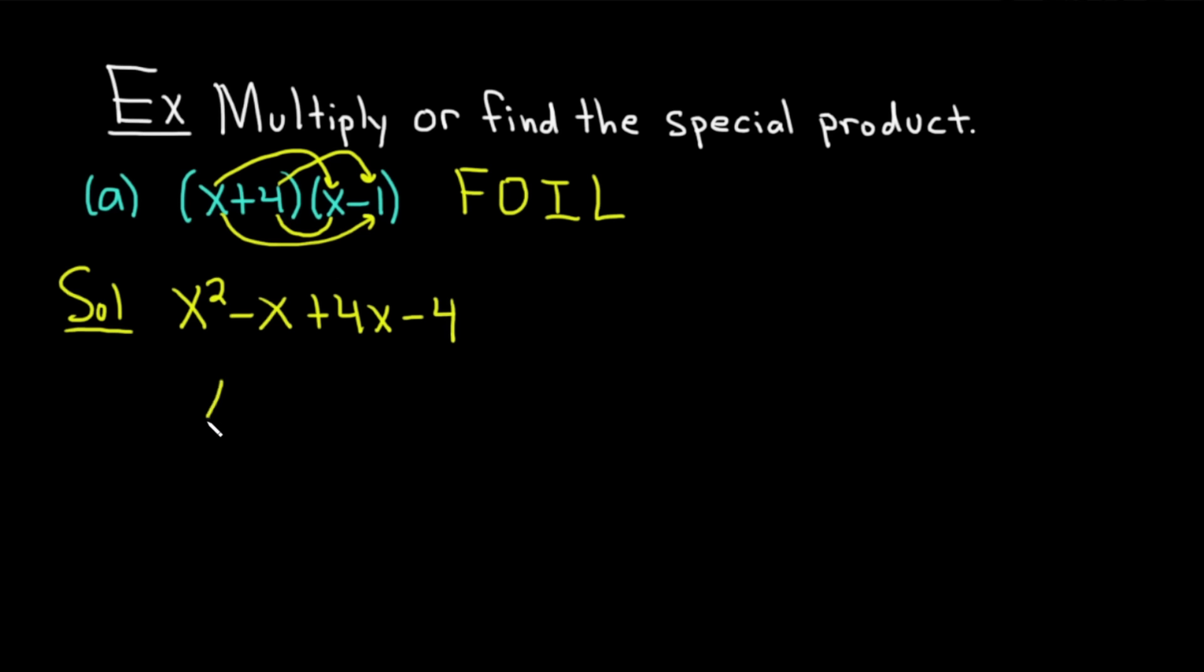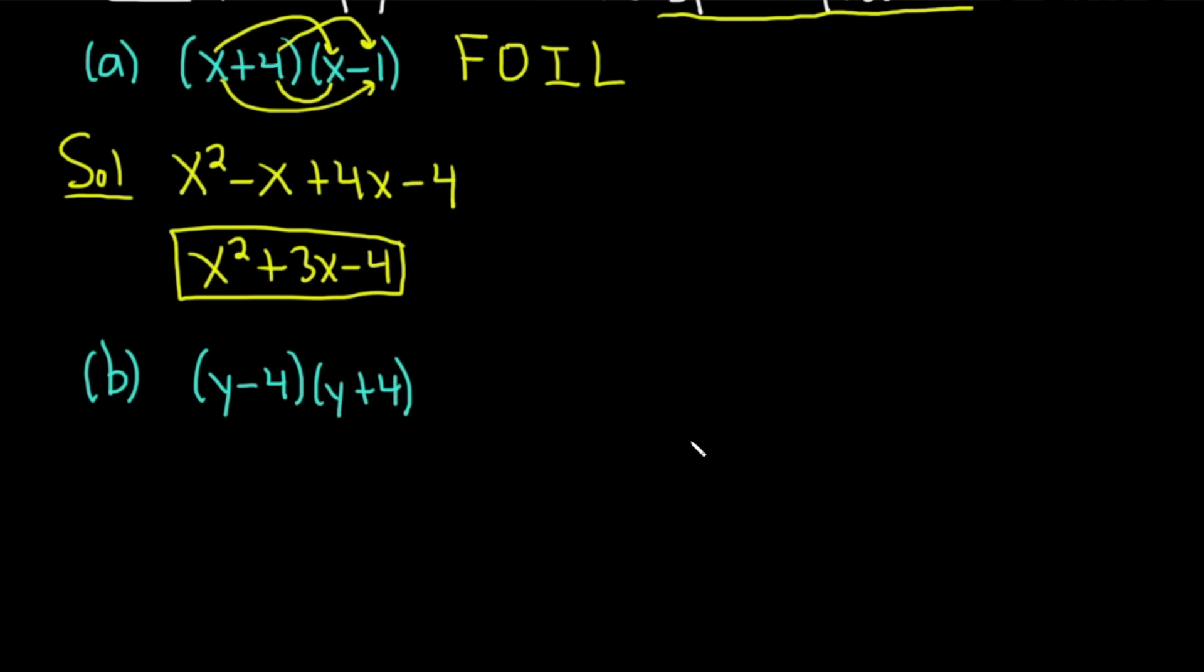And we can combine like terms here. So we have x squared minus x plus 4x is plus 3x. Then we have a minus 4 here. The FOIL method is pretty powerful, but it does take quite a few computations. There's some special products that are actually much faster than FOIL. Let me show you in the next example. Part B, we have y minus 4 times y plus 4. So you might recognize this because this is very similar to a formula. So this is an example of a special product.